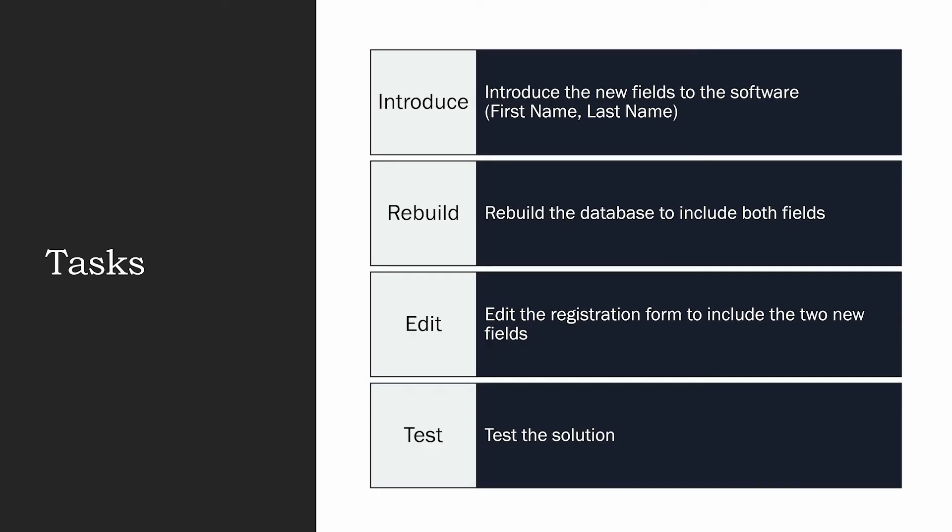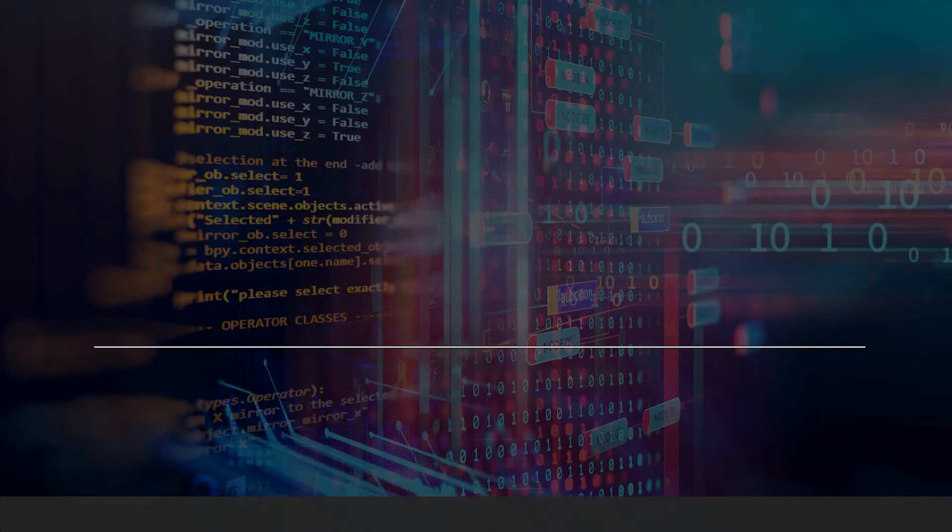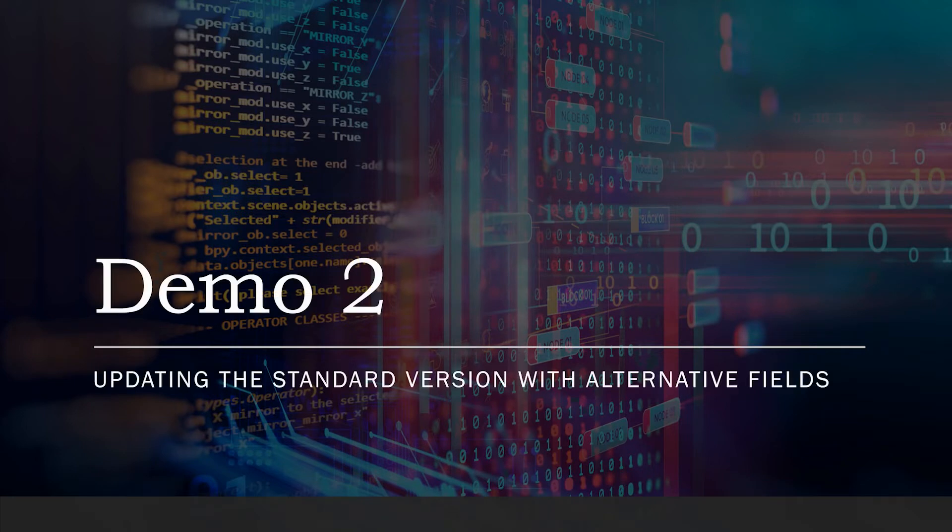So to recap what we're going to do: we're going to introduce the new fields — first name and last name — to the software, then rebuild the database to include both fields, then edit the registration form to include the two new fields. Once we've done that, we're going to test the solution to make sure it works, and then all being happy we should be able to go straight on to demo three. So let's move straight on to demo two — updating the standard version with alternative fields.